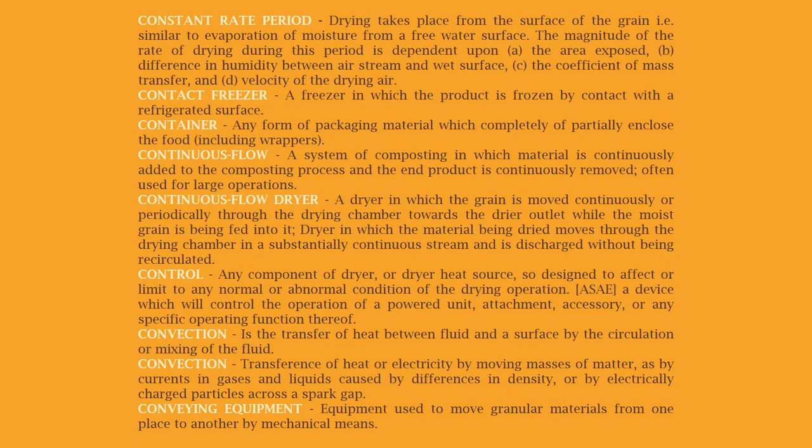Constant rate period: drying takes place from the surface of the grain, similar to evaporation of moisture from a free water surface. The magnitude of the rate of drying during this period is dependent upon: (a) the area exposed, (b) difference in humidity between the air stream and wet surface, (c) the coefficient of mass transfer, and (d) velocity of the drying air. Contact freezer: a freezer in which the product is frozen by contact with a refrigerated surface.